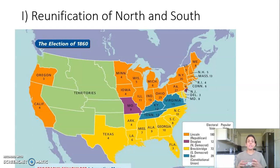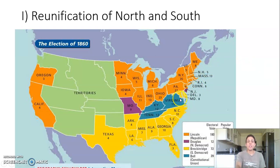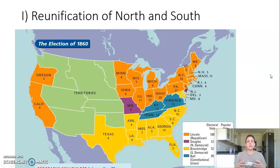If you remember, the election of 1860 precipitates the Southern — at least the Lower South — seceding from the Union. And then after the firing upon Fort Sumter in 1861, the Upper South also secedes from the Union, forming their own country called the Confederacy. Those states that stay in the Union remain a part of the United States of America. After the Civil War, the first big question is how are they actually going to reintegrate these Confederate states back into the Union?